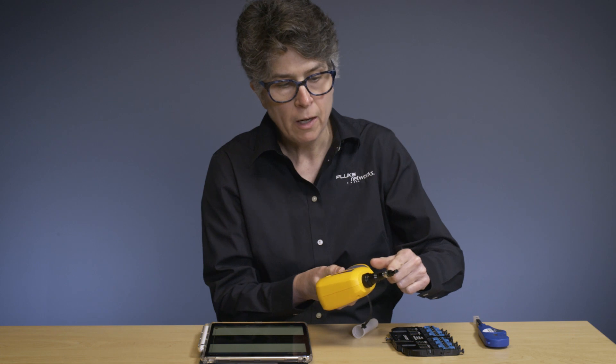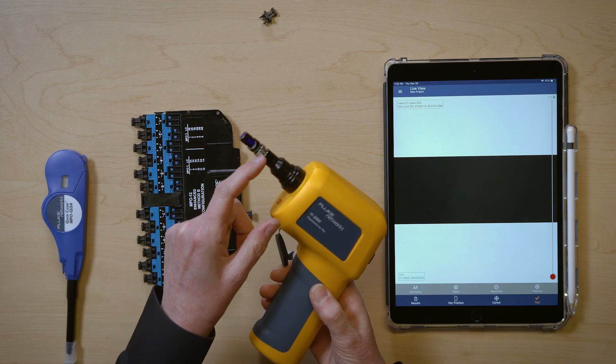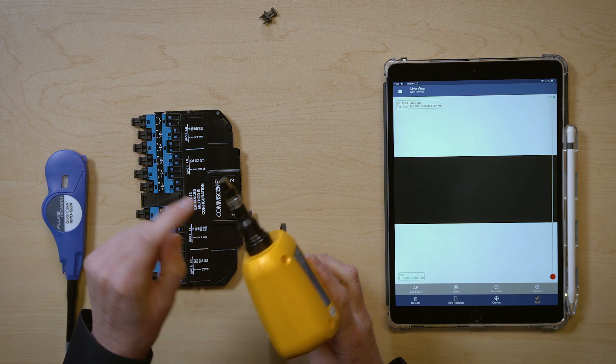So because it's APC, I have already gone in and changed my tip. You can see it's a green tip and it is slightly angled, so it's APC.